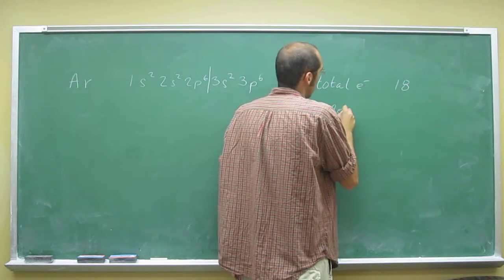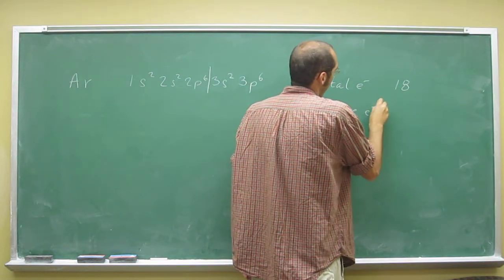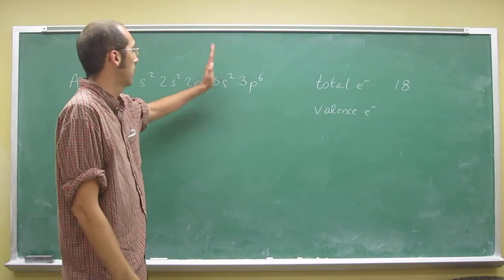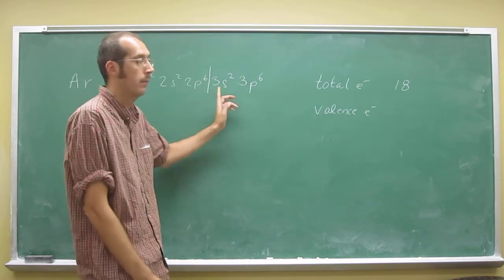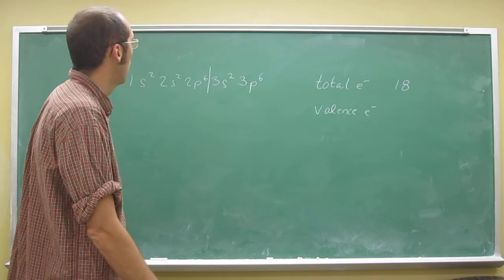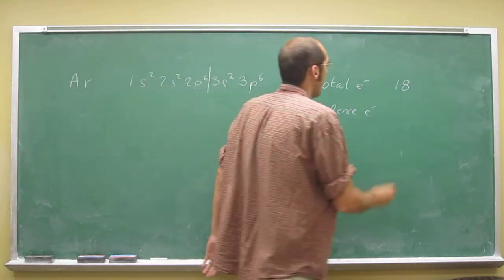The valence electrons, well, it's just the ones that are to the right of that line, right? In that last period that you're going down, so in this case it's 8.